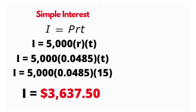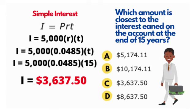Now let's look at our answer choices. It says which amount is closest to the interest on the account in 15 years. We can look at it - it hits right on there. So really this is a pretty simple problem as long as we know how to work with our formula.